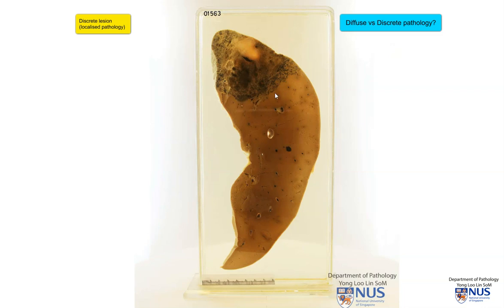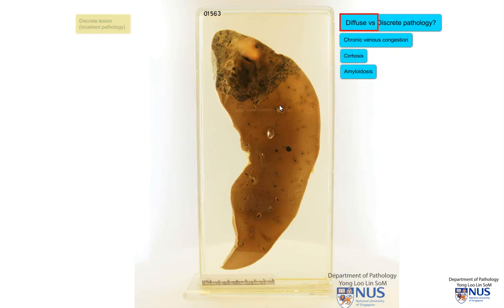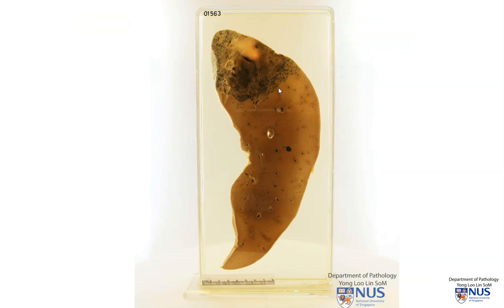The differential diagnoses are quite distinct. An example of a diffuse process would be chronic venous congestion, cirrhosis, or amyloidosis. In this instance, it is very clearly a discrete lesion. So let's take a closer look.